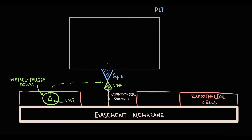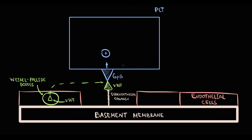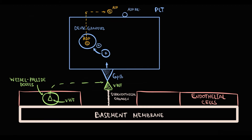After adhesion, platelets become activated. In response to this, they undergo shape change that results in their degranulation. With degranulation, platelets release the content inside them, including the dense granules that contain ADP. ADP that is released into the blood acts on ADP receptors on platelets and activates them. Activation of the ADP receptor forces platelets to transport GP2B3A receptor to the surface, where GP2B3A serves as a binding site for fibrinogen.